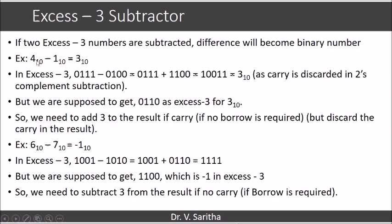For example, consider 4 minus 1 — we will get 3 in base 10. In XS3, 4 is represented as 7 (0111) and 1 is represented as 4 (0100). So we perform 7 minus 4 using normal 2's complement subtraction. The 2's complement of 0100 is 1100, and when we add these two numbers we get 10011, which is 3 in base 10, as the carry is discarded in 2's complement subtraction.